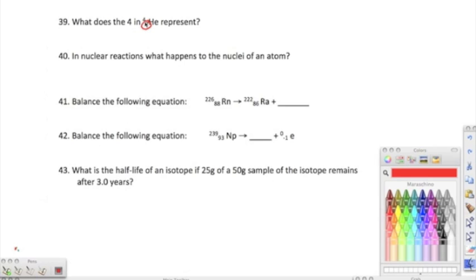Now, in 40, it says, in nuclear reaction, what happens to the nuclei of an atom? The atoms in a nuclear reaction, the atoms become more stable, and they give off large amounts of energy. When either they're in a fusion or a fission reaction, they're going to become more stable. They're going to give off a lot of energy while they do this as well.